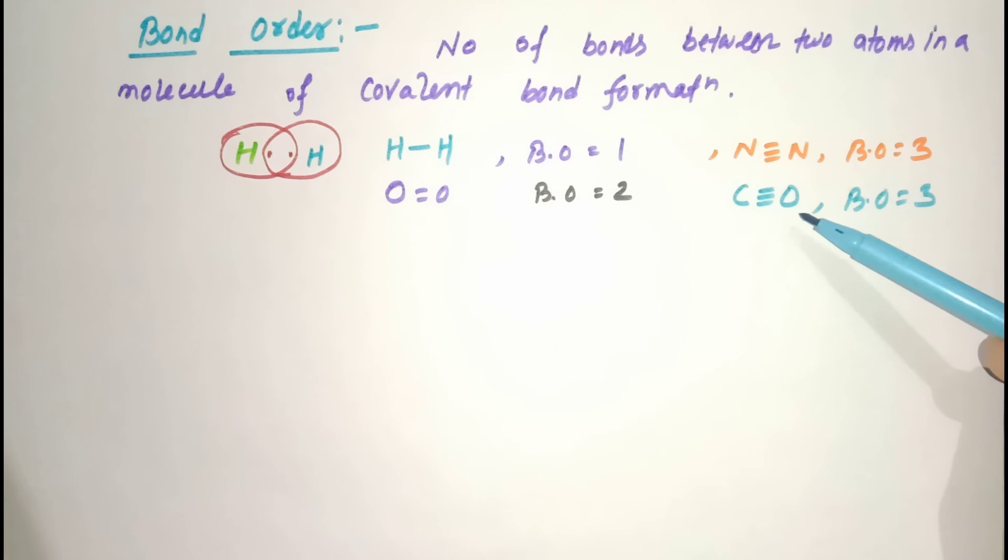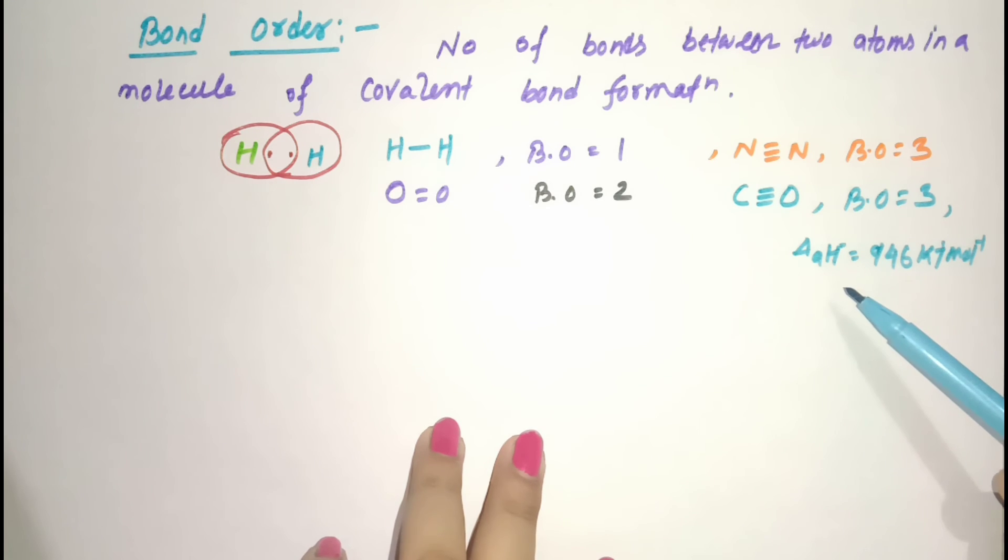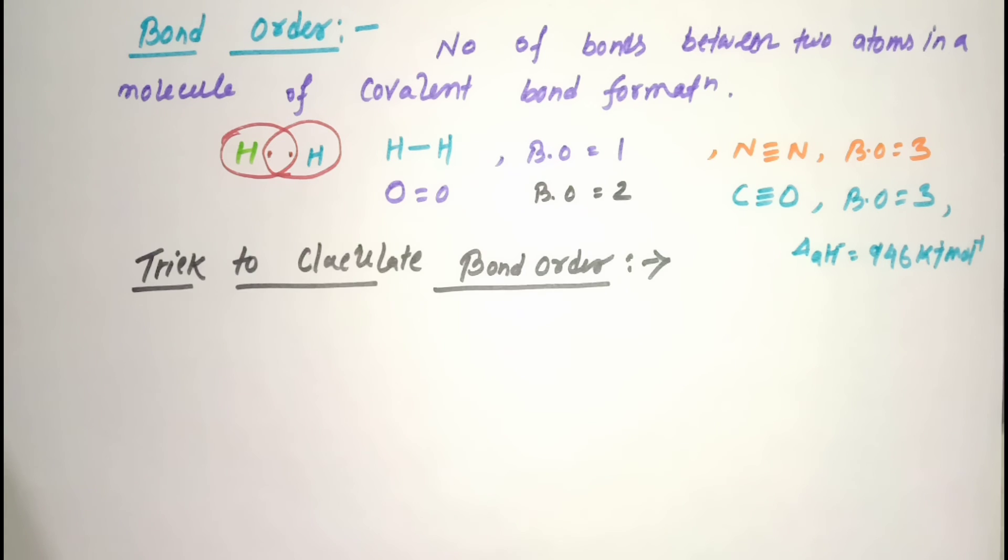Similarly, in case of carbon monoxide, there are 3 shared electron pairs between carbon and oxygen, so its bond order is 3. Carbon monoxide's energy of atomization is 1076 kJ per mole. It has one of the highest bond enthalpies among diatomic molecules. The stronger the bond, the higher the bond enthalpy, which is maximum for CO.